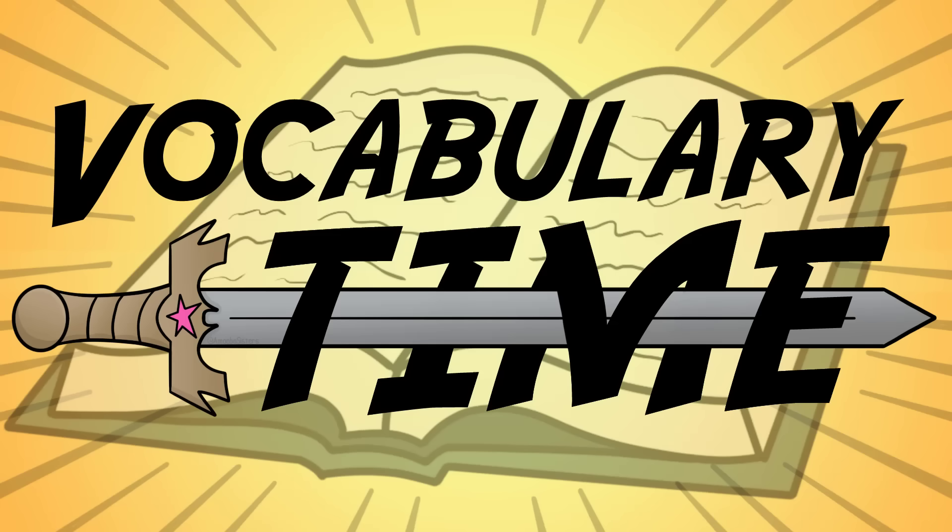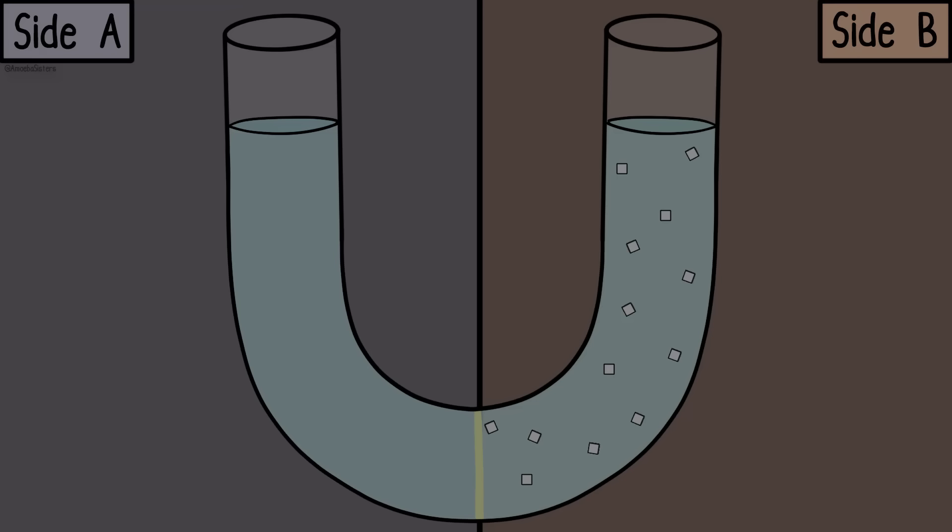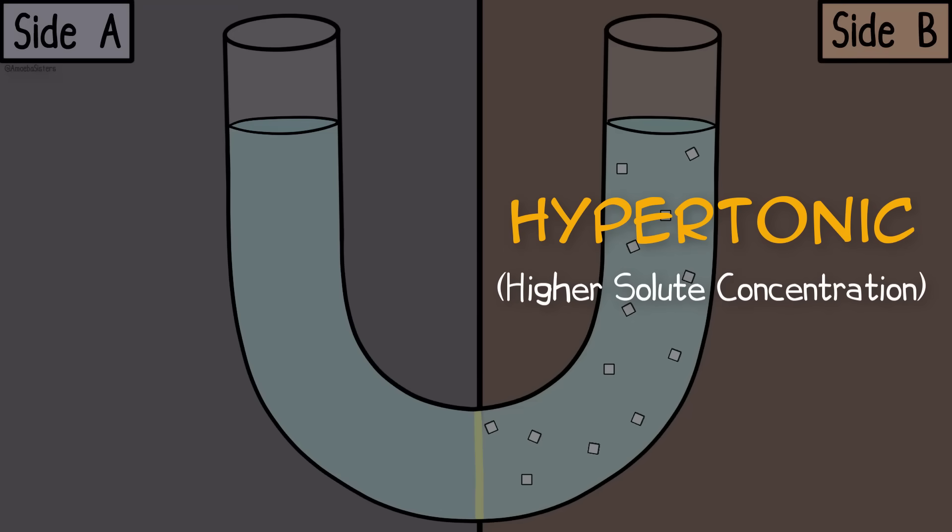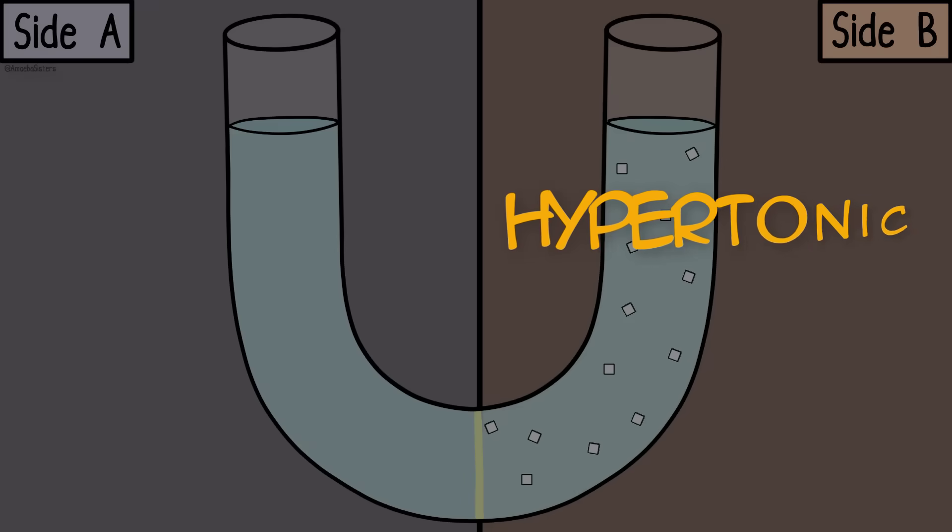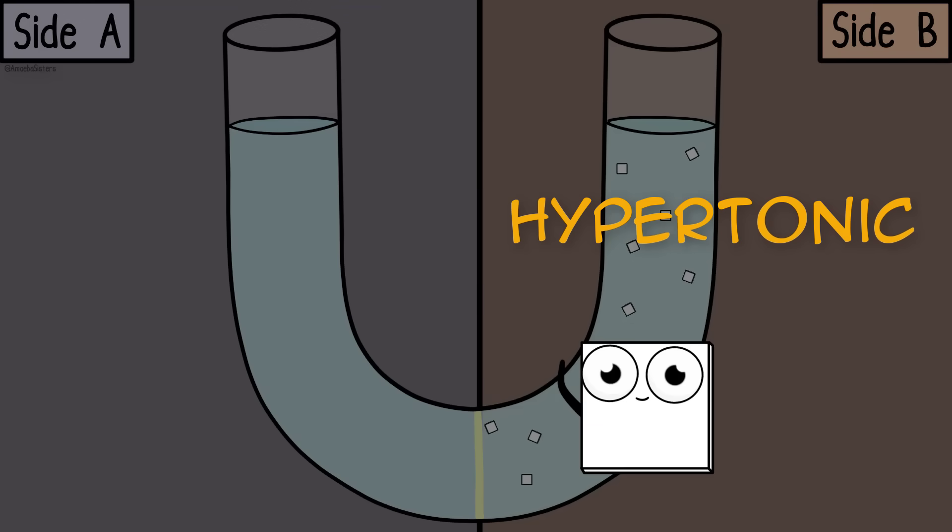Now here's some vocabulary to add in here. We call side B hypertonic. That means higher solute concentration. But we can't just say something is hypertonic without comparing it to something else. We say side B is hypertonic to side A because it has a higher solute concentration than side A.